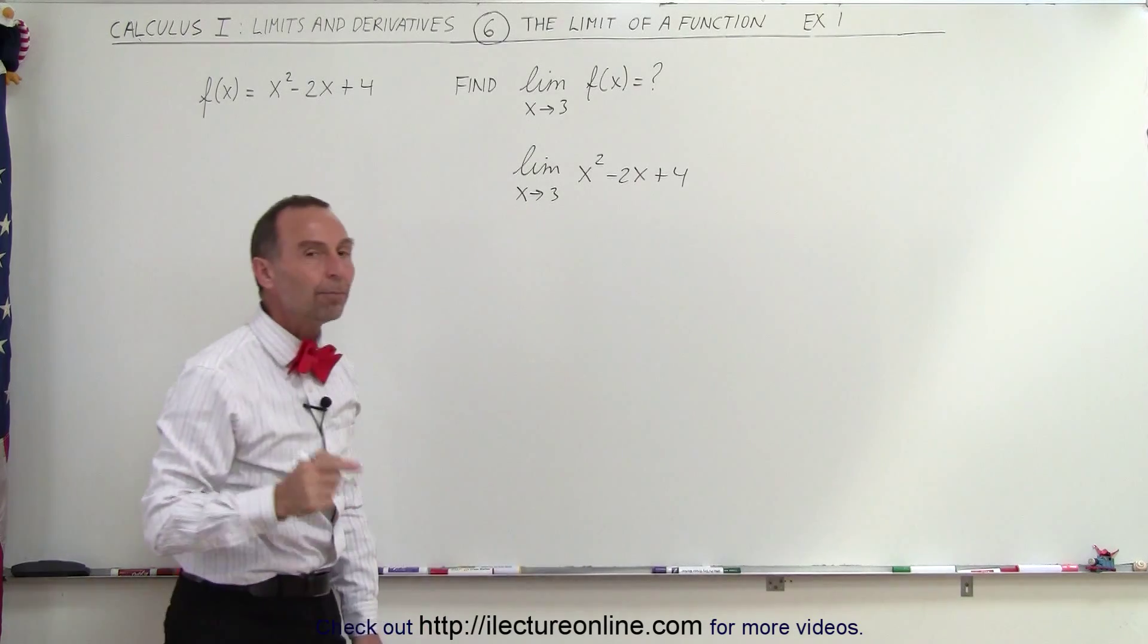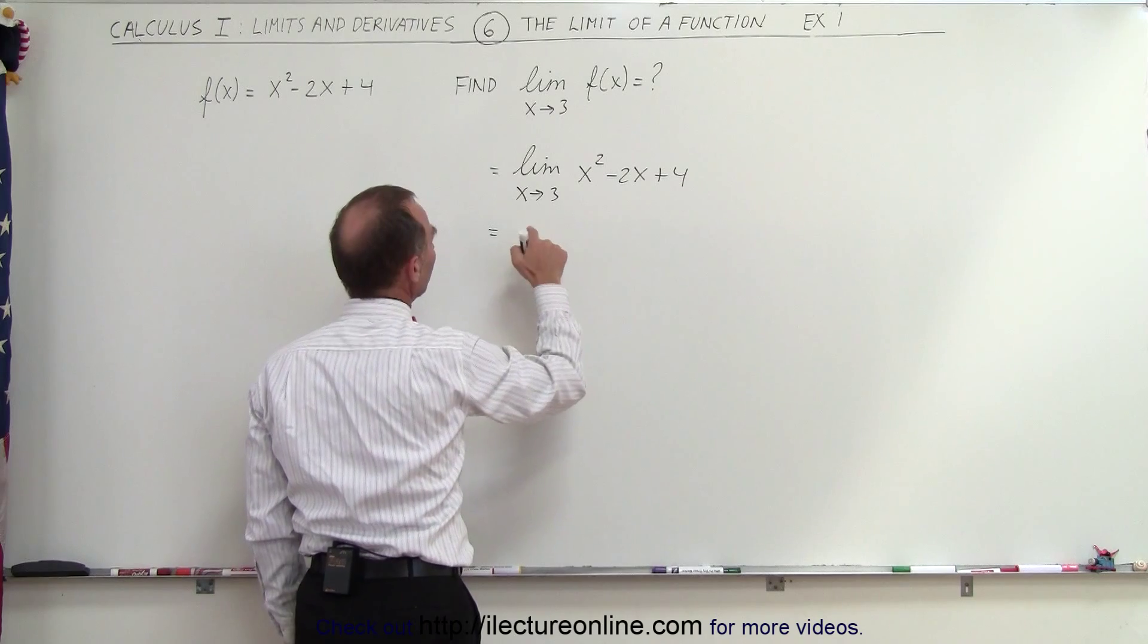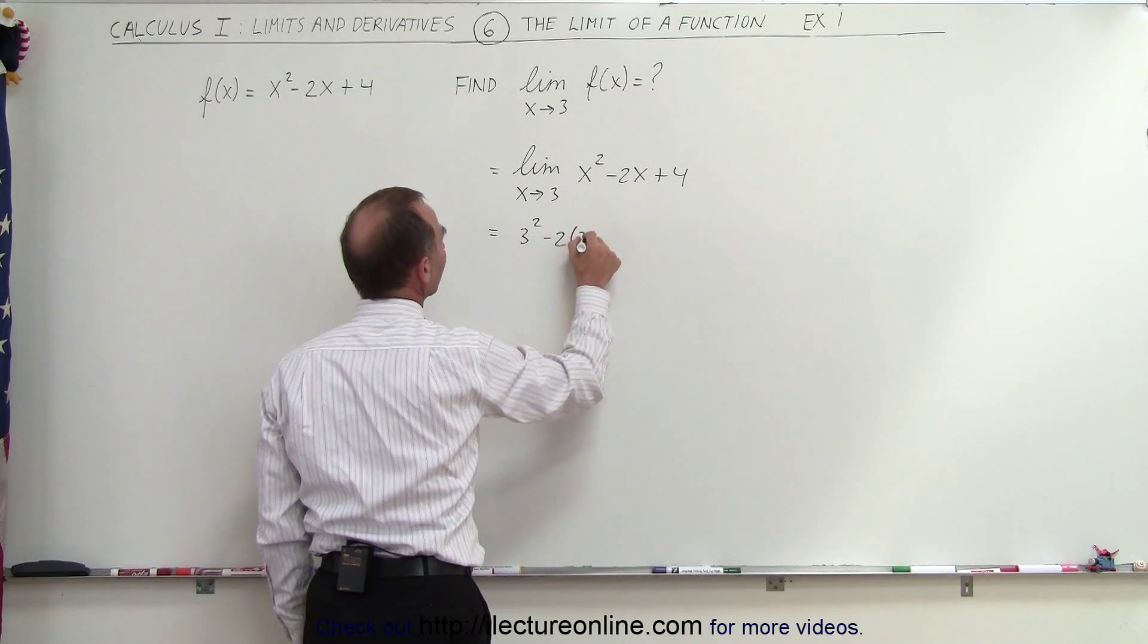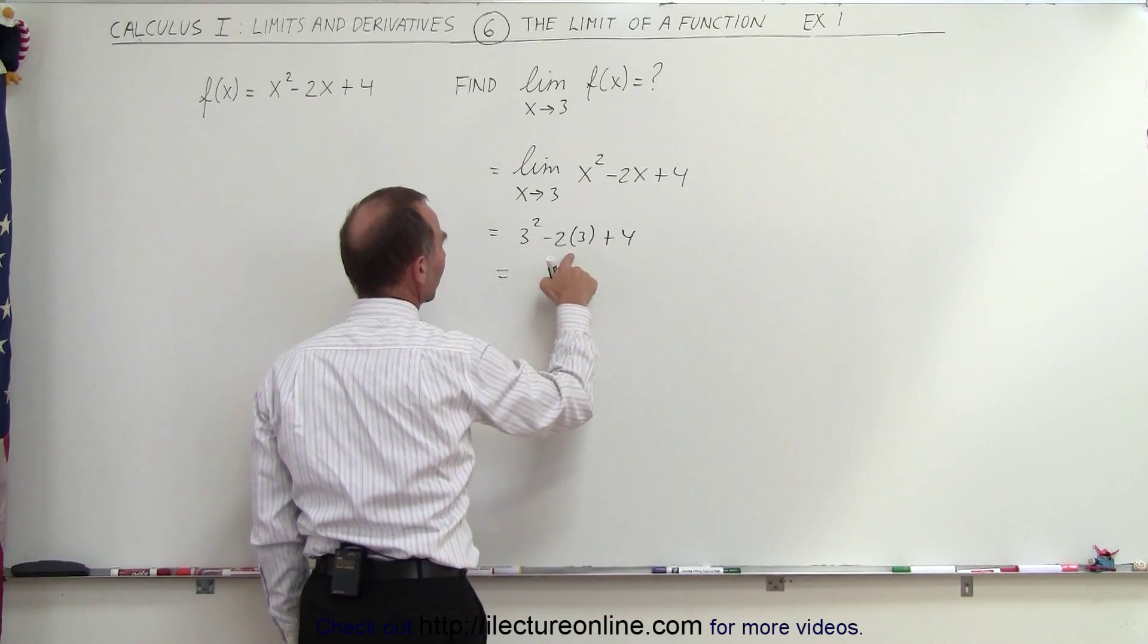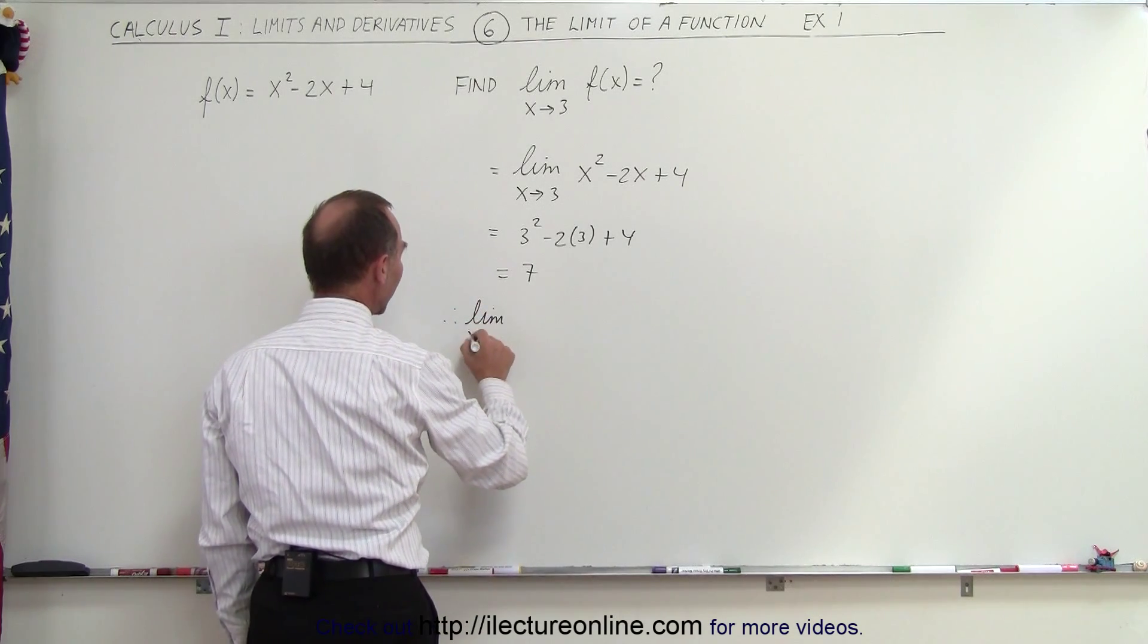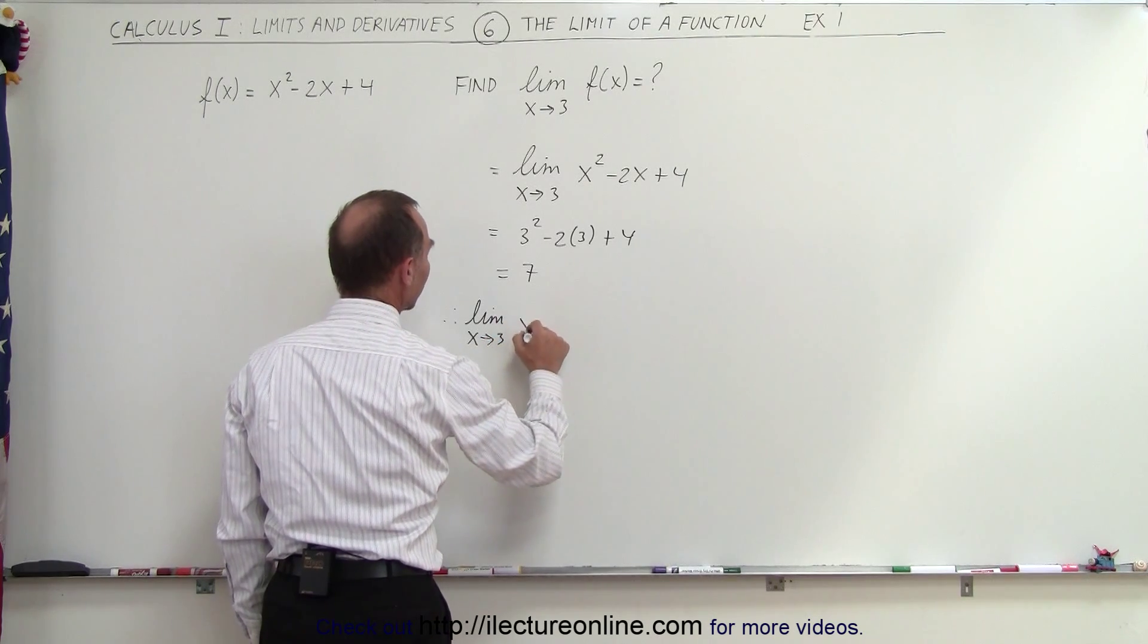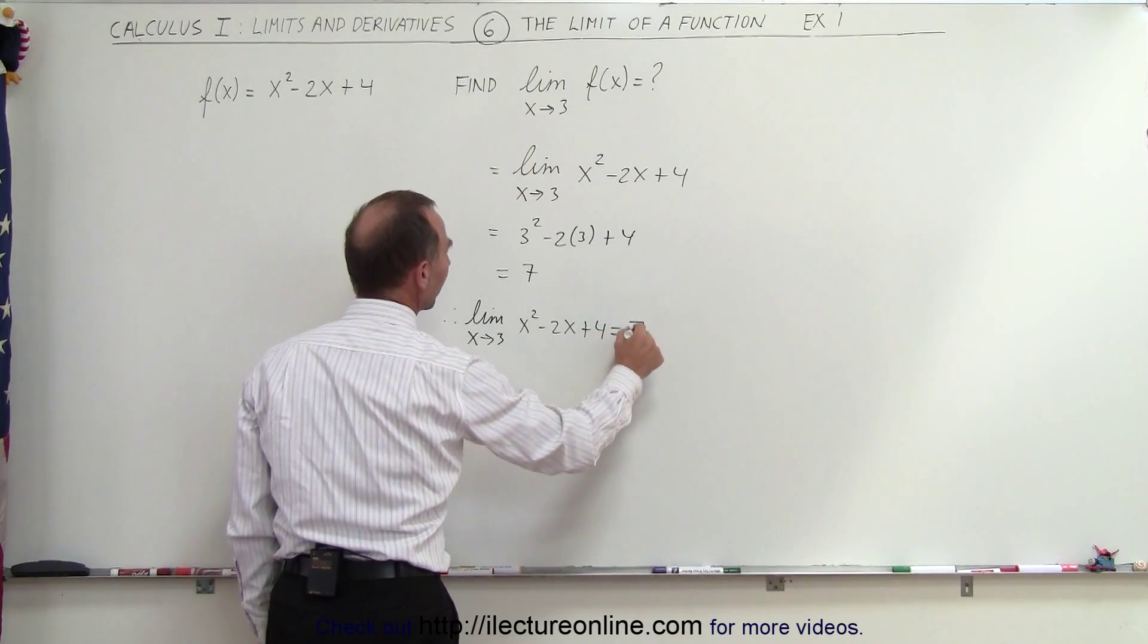So let's go ahead and plug the value of 3 in there. So this is equal to, when we plug the value of 3 in there, we get 3² - 2(3) + 4. So this is equal to 9 - 6, which is 3 + 4, which is equal to 7. So therefore, we can say that the limit as x approaches 3 of the function x² - 2x + 4 is equal to 7.